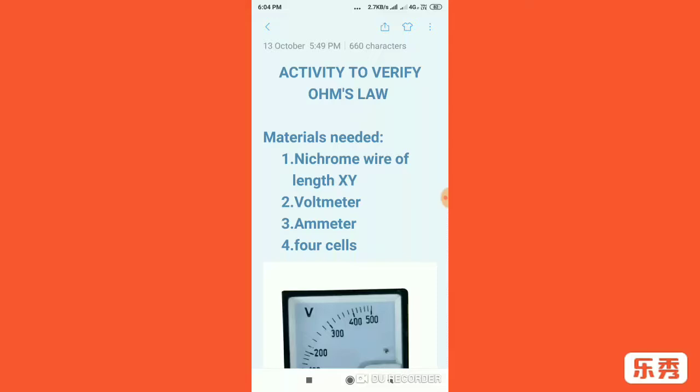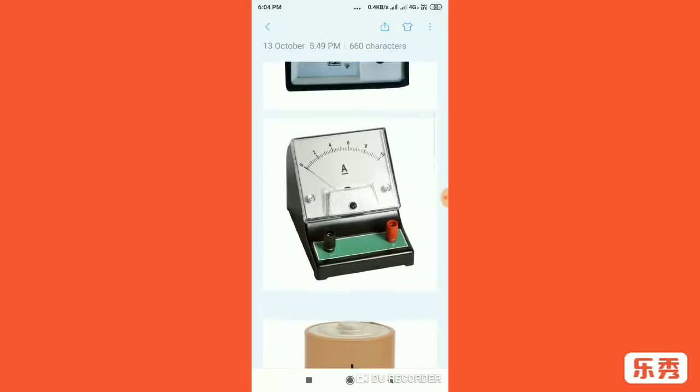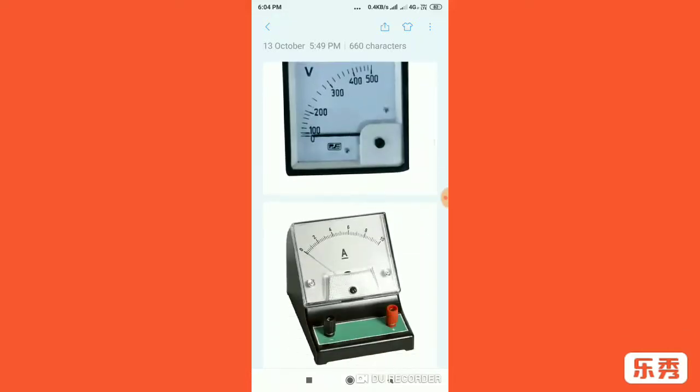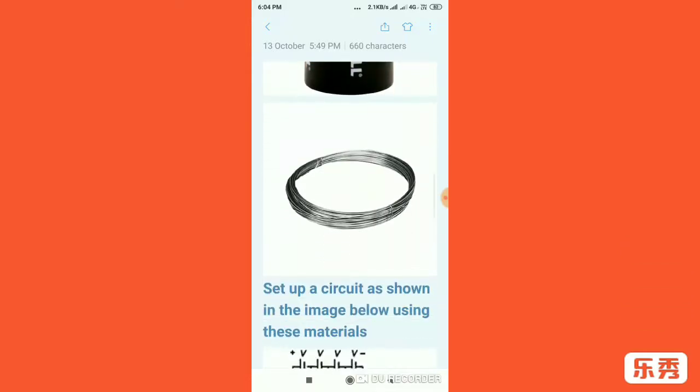Now the materials needed are very simple: a nichrom wire of any length you desire, voltmeter, ammeter, and four cells of any voltage. Preferably I would recommend 1.5 volt. Now the pictures are given below for your reference. This is voltmeter, this is ammeter, cell, nichrom wire.